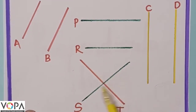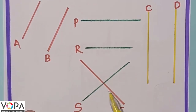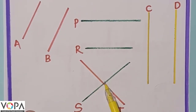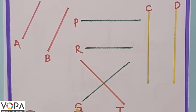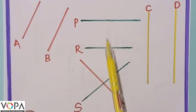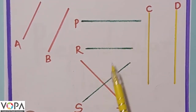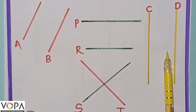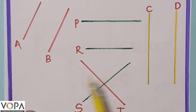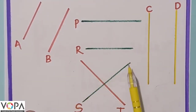But line S and line T are not the same distance from each other. Line S and line T cut each other, so line S and T are not parallel lines. Parallel lines do not intersect — that is, they do not cut each other, no matter how far they are extended on either side.